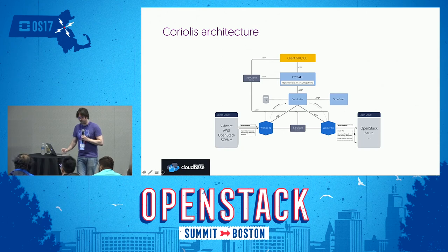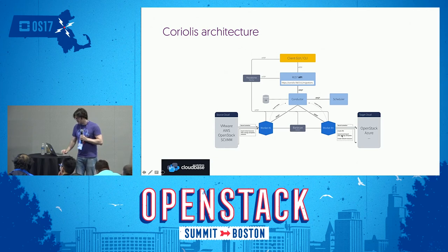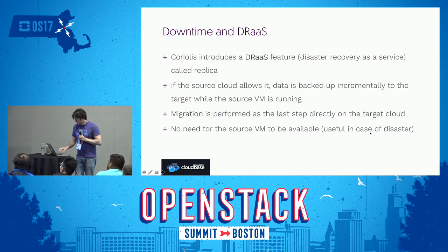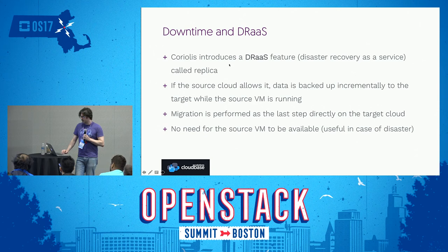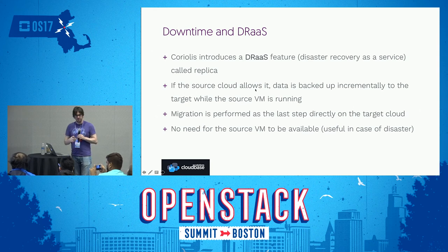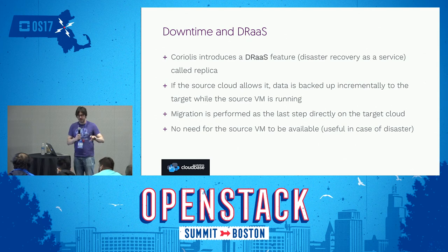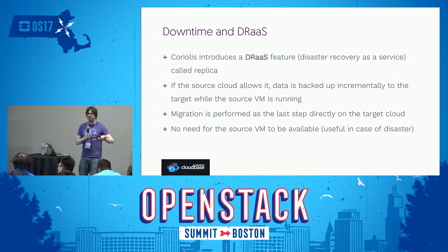Secrets are stored in Barbican, so no passwords for connecting to source or target cloud will be leaked. Additionally, there's a disaster recovery as a service feature. This uses the backup API of the source cloud to extract data and move it to the other side. In VMware's case, we use change block tracking: we take an app-consistent snapshot and ask VMware to give us only the blocks that changed since the previous replication process. We take that data, move it to the other side, and we're done.